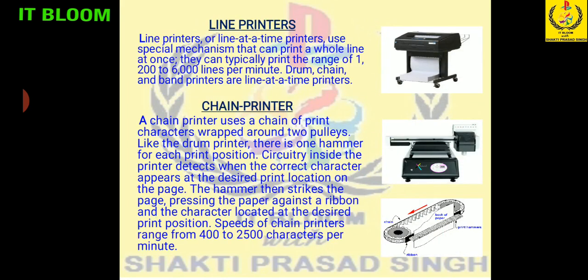Next one is the line printer, also called a line-at-a-time printer. It uses a special mechanism that can print a whole line at once, typically printing in the range of 200 to 6000 lines per minute. Drum, chain, and band printers are line-at-a-time printers. They are commonly used in bank branches and offices where a huge amount of data for transactions — debit and credit information for account holders — needs to be printed.